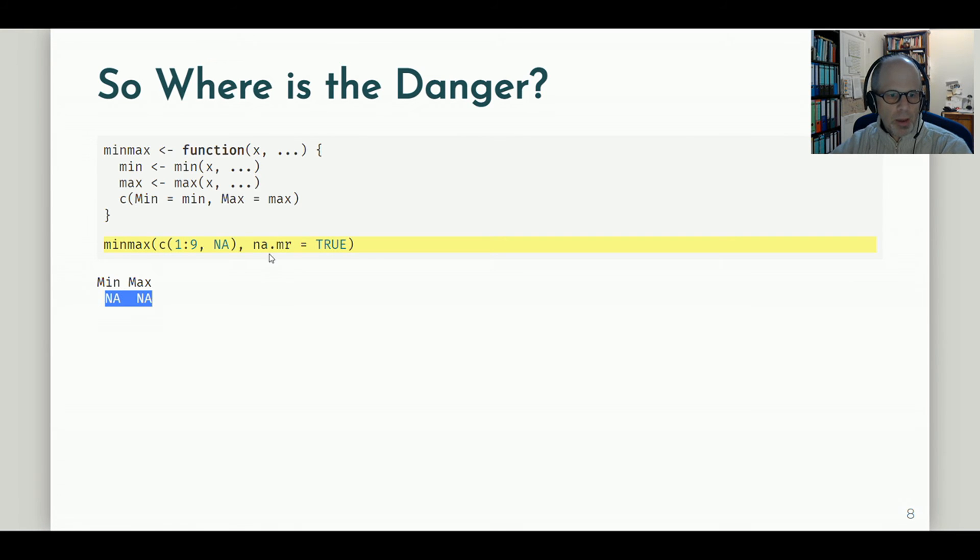So I get two NAs back, which is not my desired result. I wanted to remove the missing values. This is not done. The argument is ignored and I don't get an error or a warning.